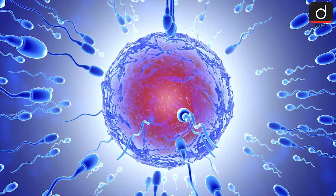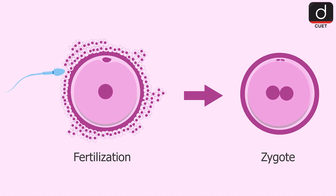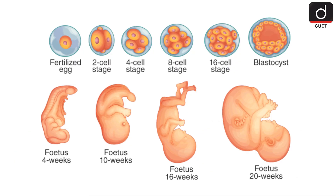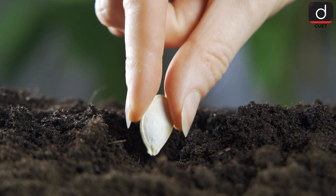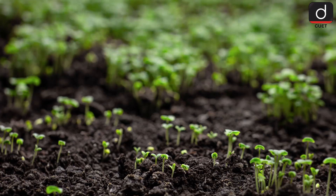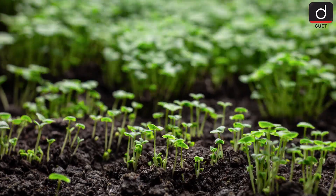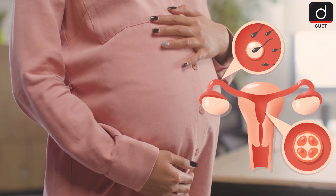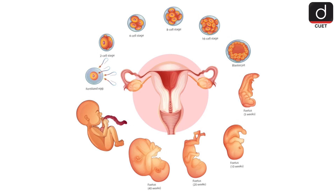Fertilization is the process where the sperm meets the egg and they combine to form a single cell called a zygote. This zygote has all the genetic information needed to grow into a new organism. Picture a seed and soil — the seed is like the zygote, and with the right conditions, just like the soil, it will start to grow into a plant. In animals, fertilization usually happens inside the female's body, and the zygote begins to develop into a baby.